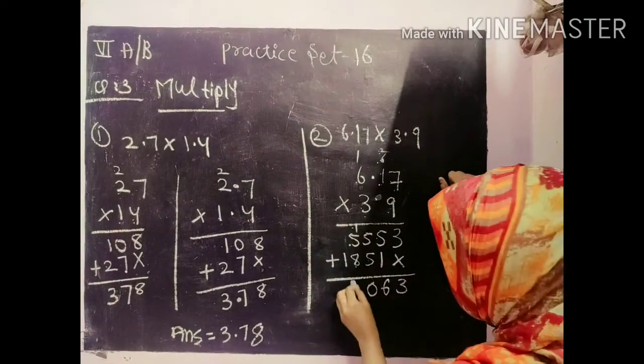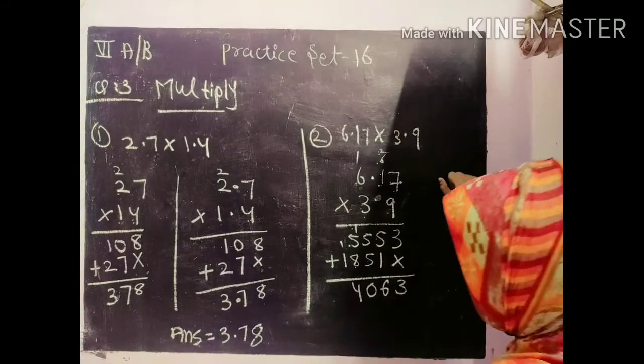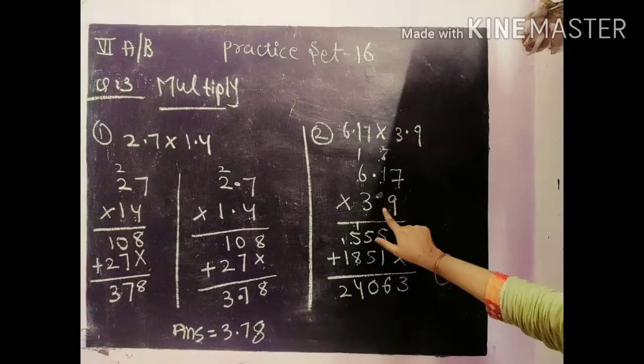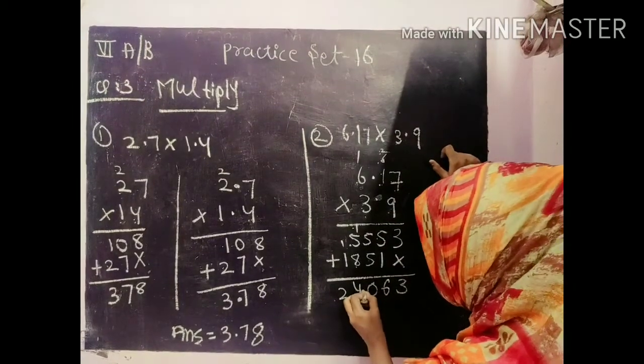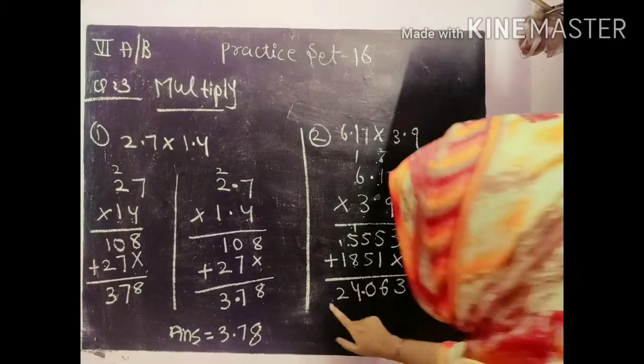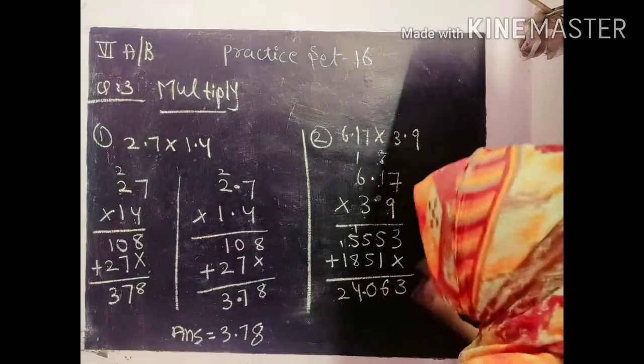8, 5, 13. 13, 1, 14. Here 1 will come. 1, 1, 2. How many points have come? 1, 2, 3. So here 1, 2, 3. The answer will be 24.063.